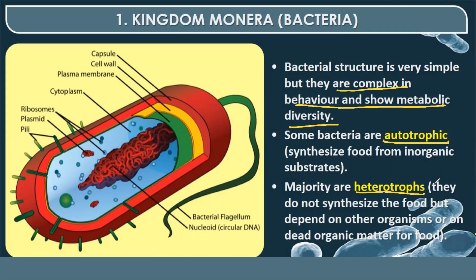The components present in a bacterial cell are: capsule (the outermost covering, which provides virulence), cell wall, plasma membrane, cytoplasm, ribosomes, plasmid (a circular extrachromosomal DNA), pili (small organs that help in attachment and locomotion), flagella, and nucleoid. Since Monera are prokaryotic, membrane-bound organelles are absent.